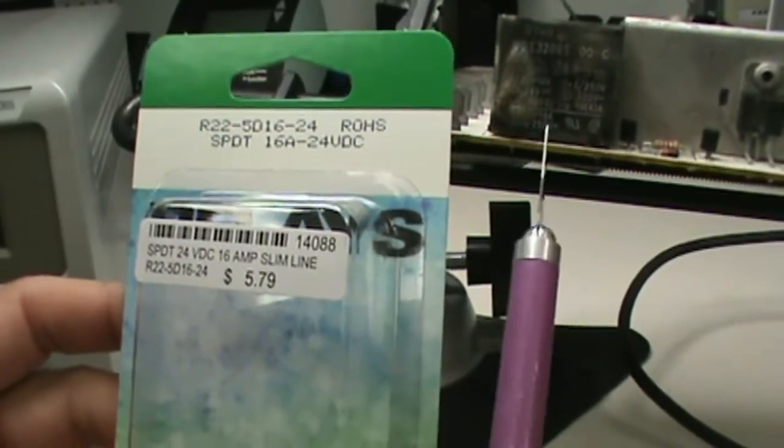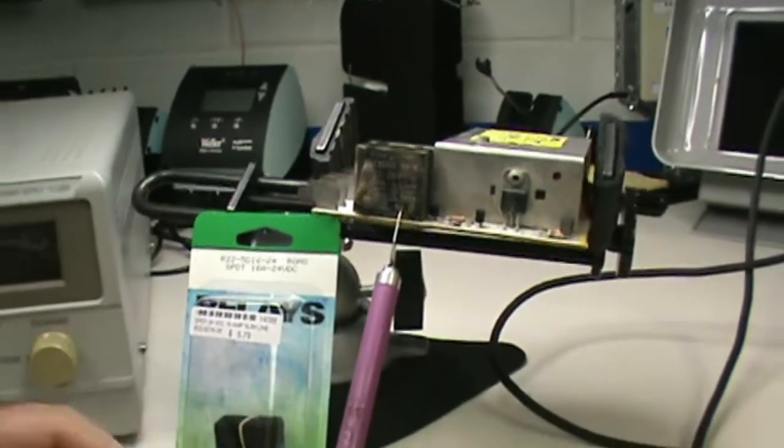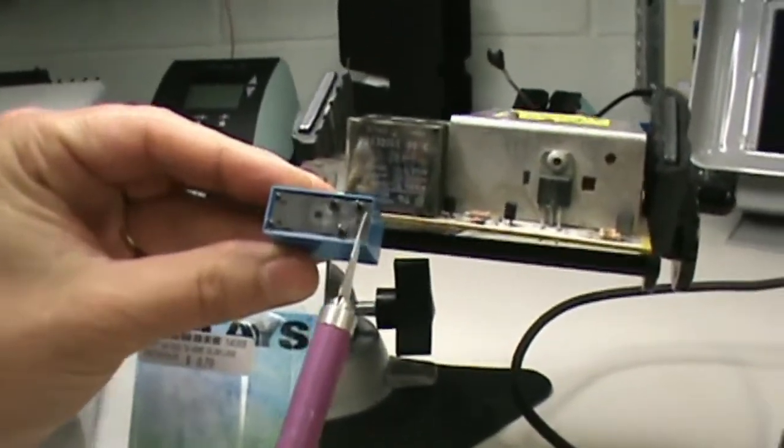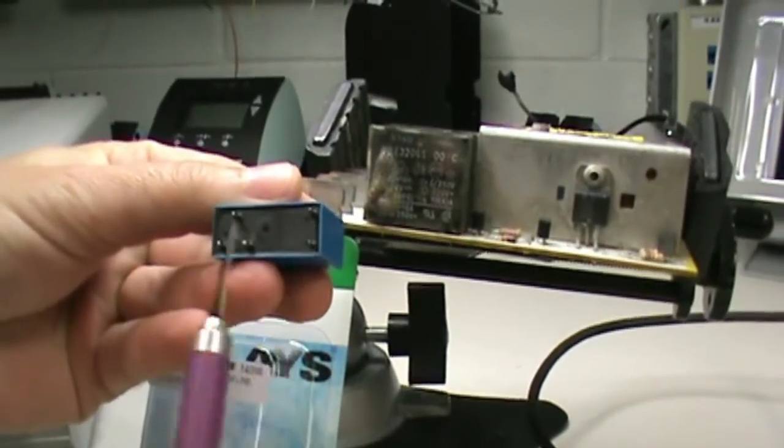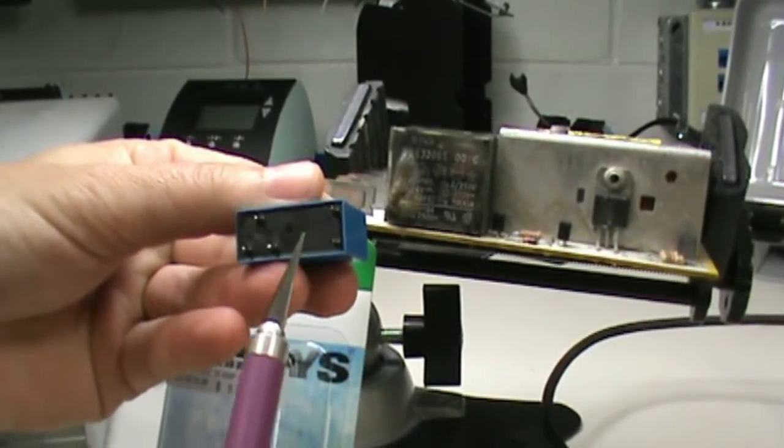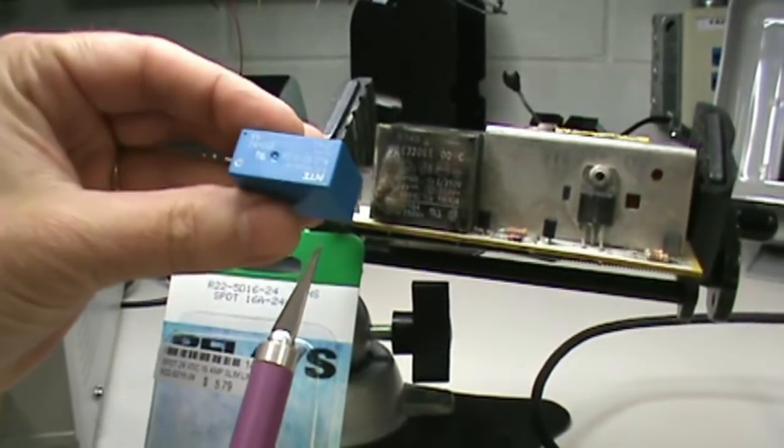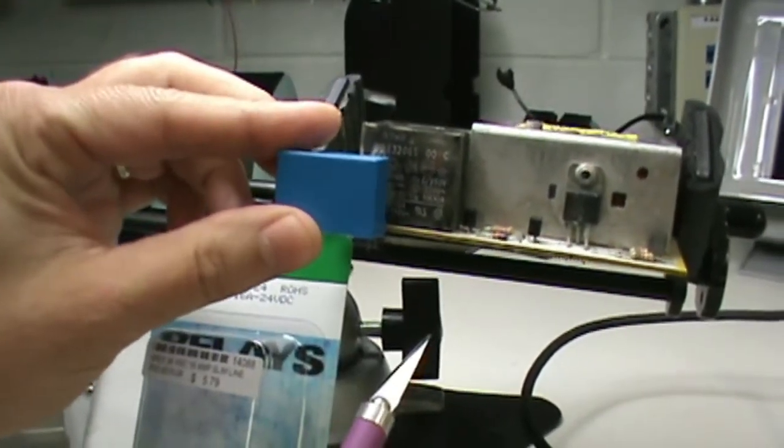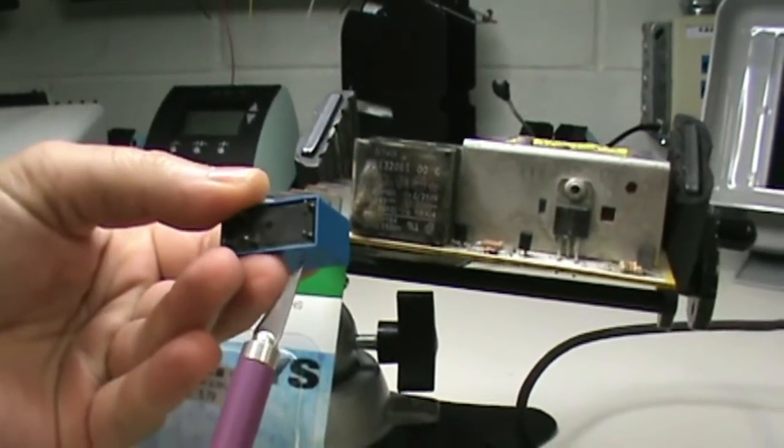This relay is a drop in replacement for the stock E series relay. So here's one that's out of the package. So you can see the Form C relay contacts. This is your coil. Now what's nice about this relay is there's no internal flyback diode. So the polarity does not matter you're not going to screw up putting this relay in here. You will notice that it is a little bit shorter than the stock relay. But the width and the pin configuration is identical.